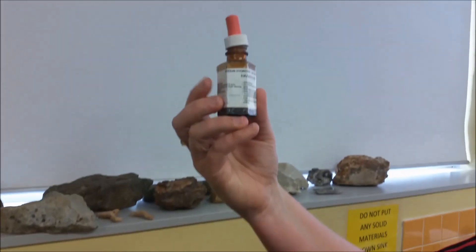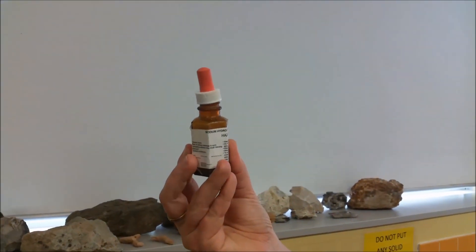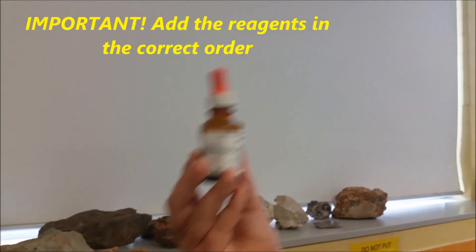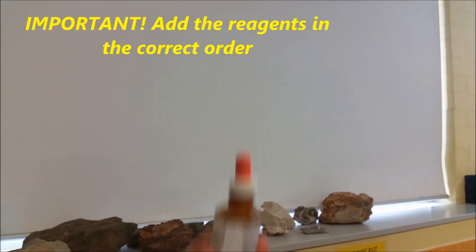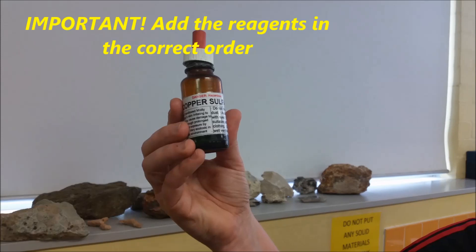The first step is you need to add one pipette full of sodium hydroxide. Now it's really important because you've got to add two reagents in this case, that you make sure you get one of each bottle. They are labeled sodium hydroxide, the other reagent is copper sulphate.